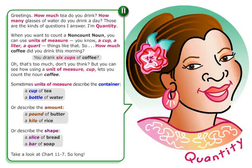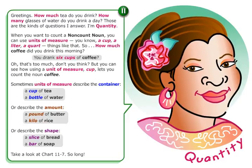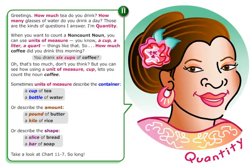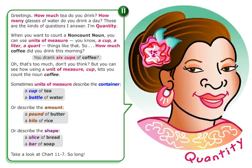When you want to count a non-count noun, you can use units of measure. You know, a cup, a liter, a quart — things like that.